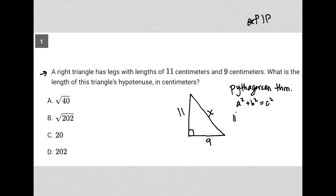So for us, we'd have 11 squared plus 9 squared equals c squared. So 11 squared is 121, plus 9 squared is 81, is equal to c squared.